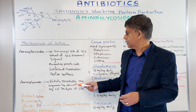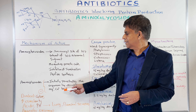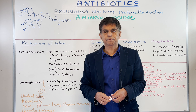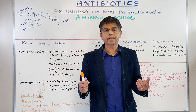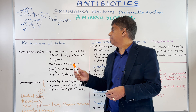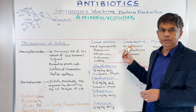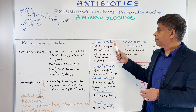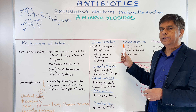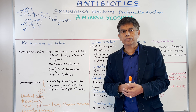Aminoglycosides also have another property: they initially penetrate the organism by disruption of the magnesium and calcium bridges of the LPS — lipopolysaccharide. This is effective against gram-negative organisms, since gram-negative bacteria are the ones that have LPS. Gram-positive bacteria don't have LPS, so that's why aminoglycosides provide very good gram-negative coverage.